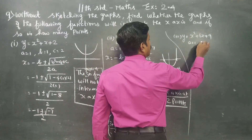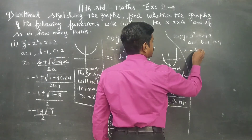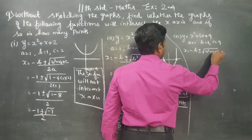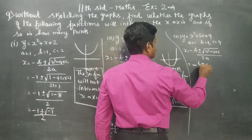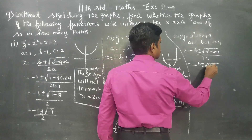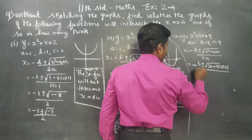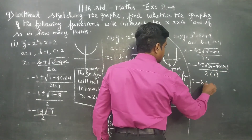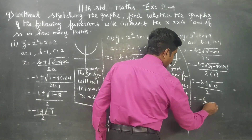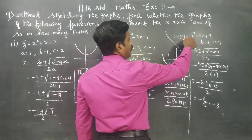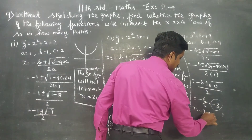For the next function: a is equal to 1, b is equal to 6, c is equal to 9. Applying the formula: x equals minus 6 plus or minus square root of 6 squared minus 4 into 1 into 9, by 2 into 1. This gives minus 6 plus or minus square root of 36 minus 36, by 2, which is minus 6 plus or minus 0, by 2.